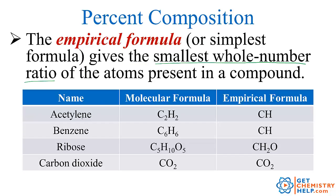So for example, acetylene, acetylene is a gas used in welding sometimes, and its actual formula or molecular formula is 2 carbons and 2 hydrogens. Well 2 to 2 though isn't the smallest whole number ratio. I could reduce 2 to 2 down to 1 to 1. So CH would be the empirical formula.